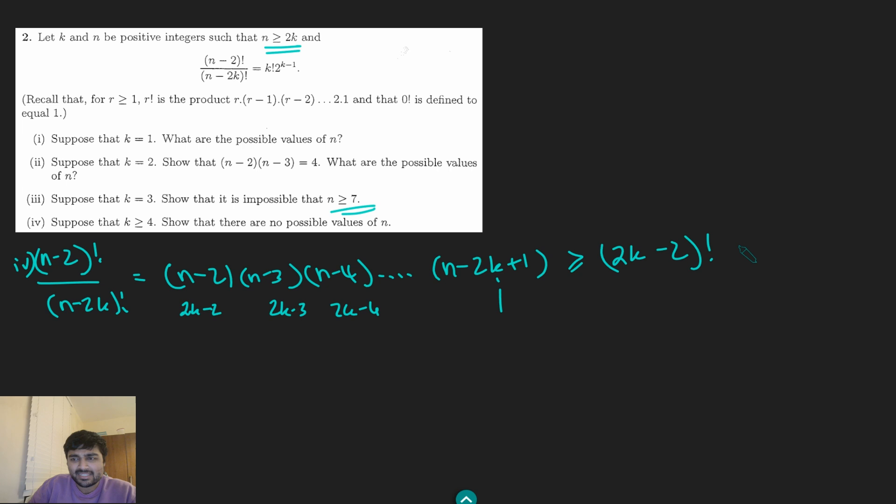And now all I really need to do is show that this thing here is strictly bigger than k! times 2 to the k minus 1 for k at least 4. And this is something we can do relatively easily with induction. So let me do the base case up here where k equals 4. And so the left-hand side is just 6!. And the right-hand side here is 4! times 2 to the 3, which is 8 times 4!, which is definitely less than 30 times 4!, which would be 6!, because 30 is 6 times 5. That's the base case done.